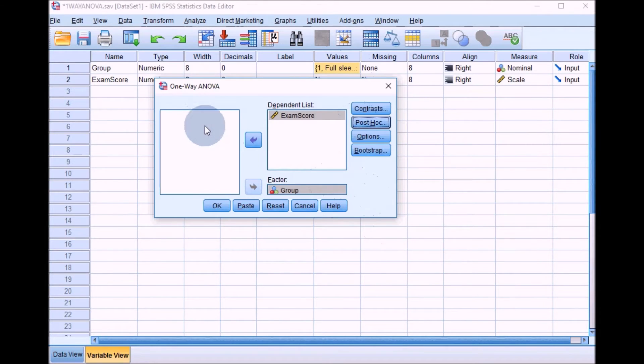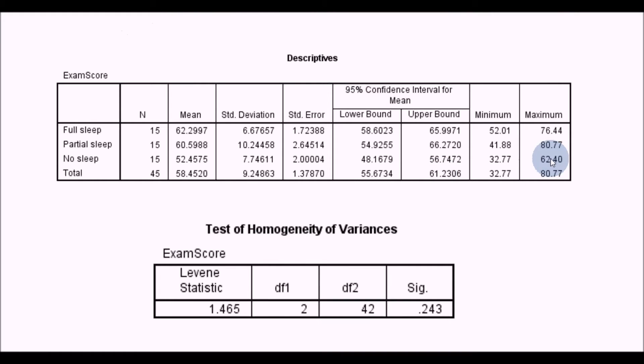Now we'll run that ANOVA. Click on OK. The first table we'll get in the output gives us the descriptive statistics. We can use this just to check what's going on. We can see the full sleep group was scoring at 62.30 on average, the partial sleep group was scoring slightly lower than this, and then the no sleep group was scoring lower at 52.46.